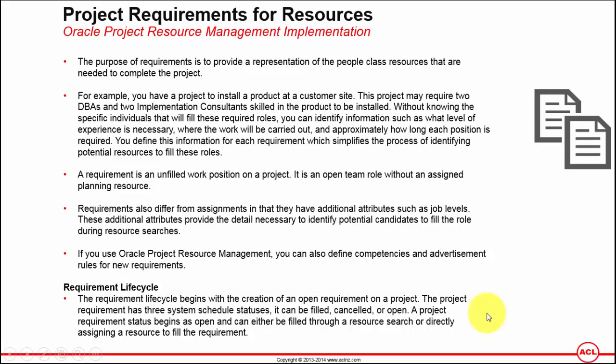In the example we were discussing, for a requirement of an Oracle DBA, one way is to advertise that requirement internally, do a resource search based on the skills the project manager is looking for, find the potential resource, interview them, sign the resource loan agreement, and bring them on to the project. The second way is to directly assign the resource — for example, if I am the project manager and I already know a highly experienced Oracle Applications DBA whose previous experience, deliveries, and skills I'm confident in, I simply assign the name of that resource to this requirement.